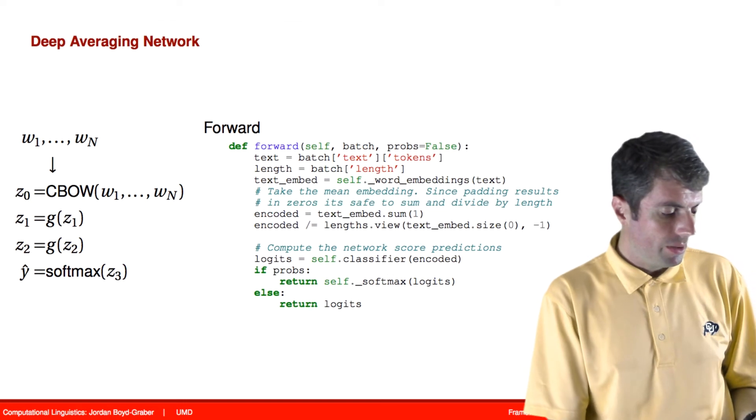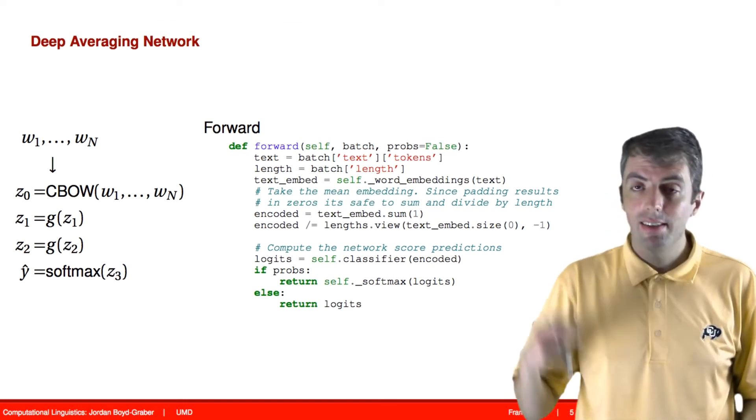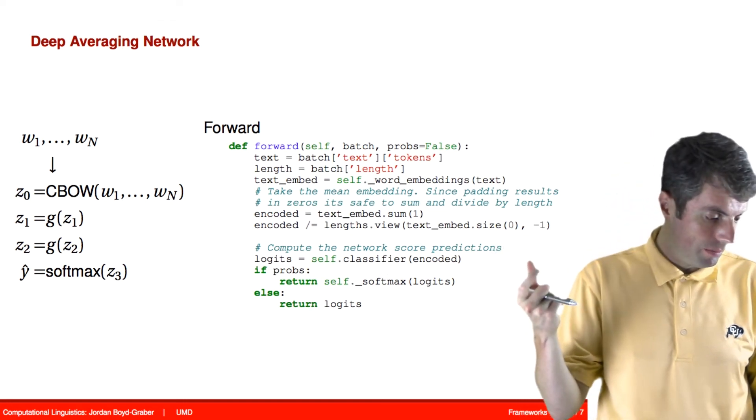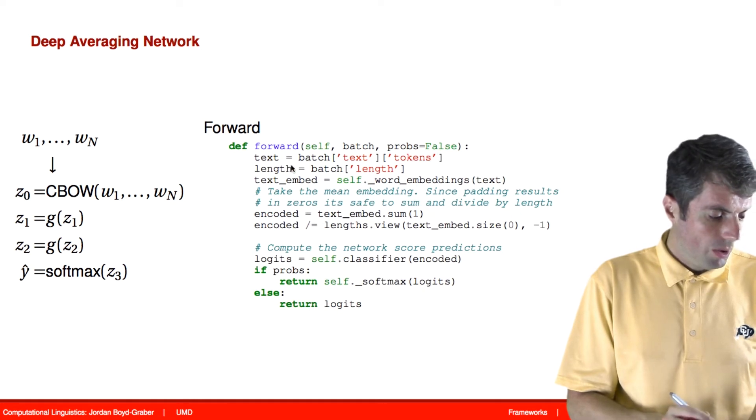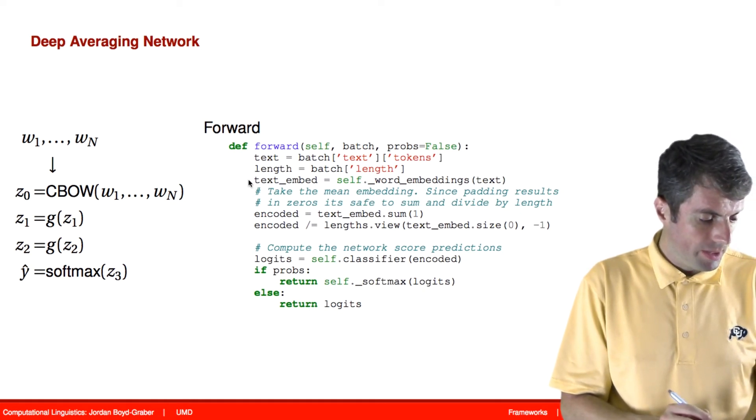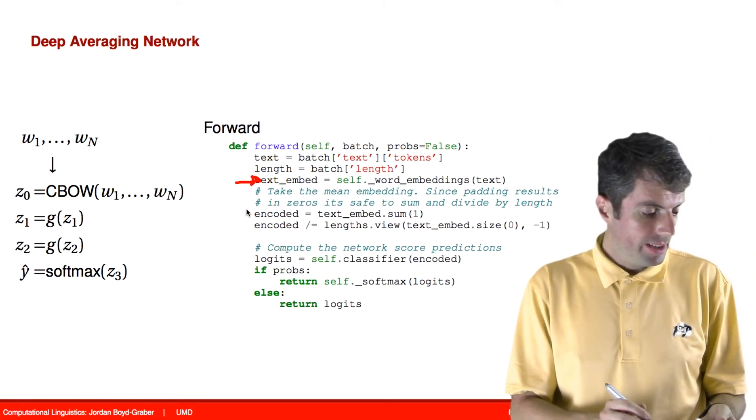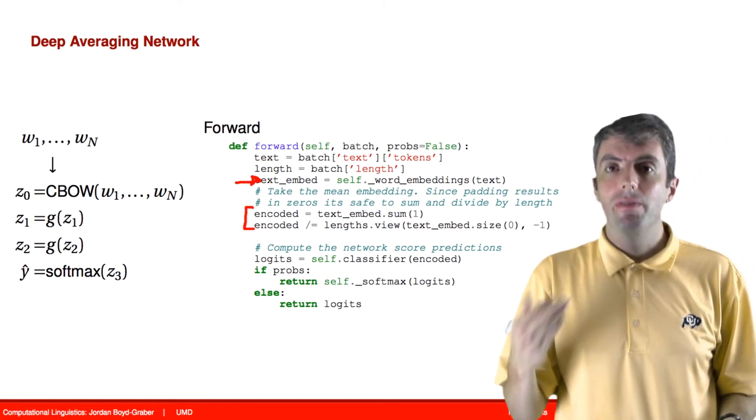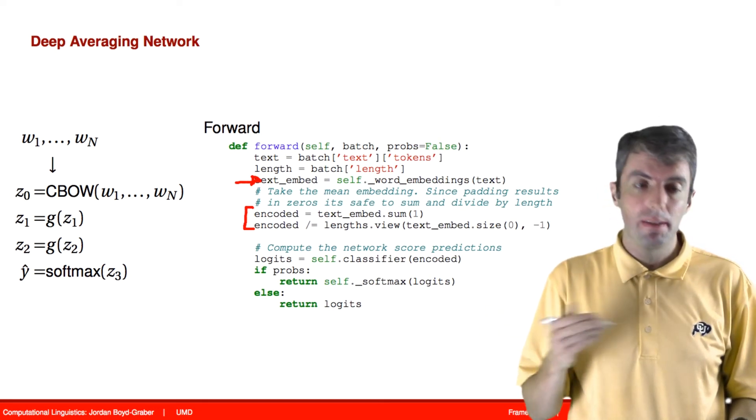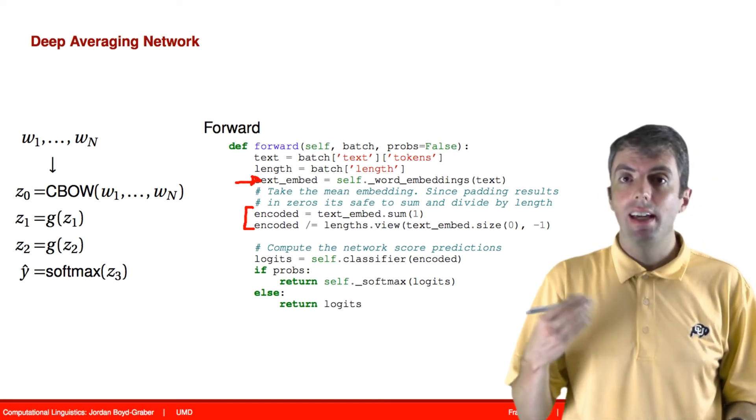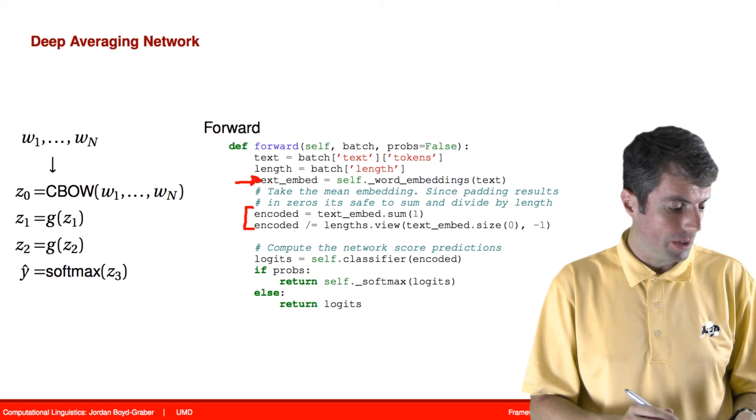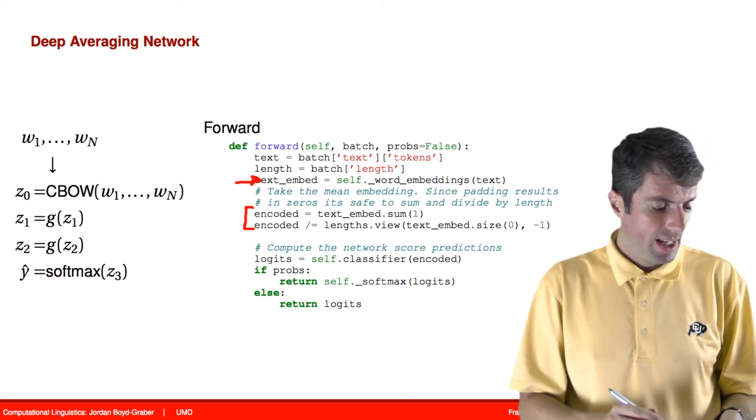In the forward function, we take some document as input, and then we look up the embedding for that word, and then we're going to take an average of that. This happens here. We first add everything together and then divide by the length. That gives us our continuous bag of words representation that we want.